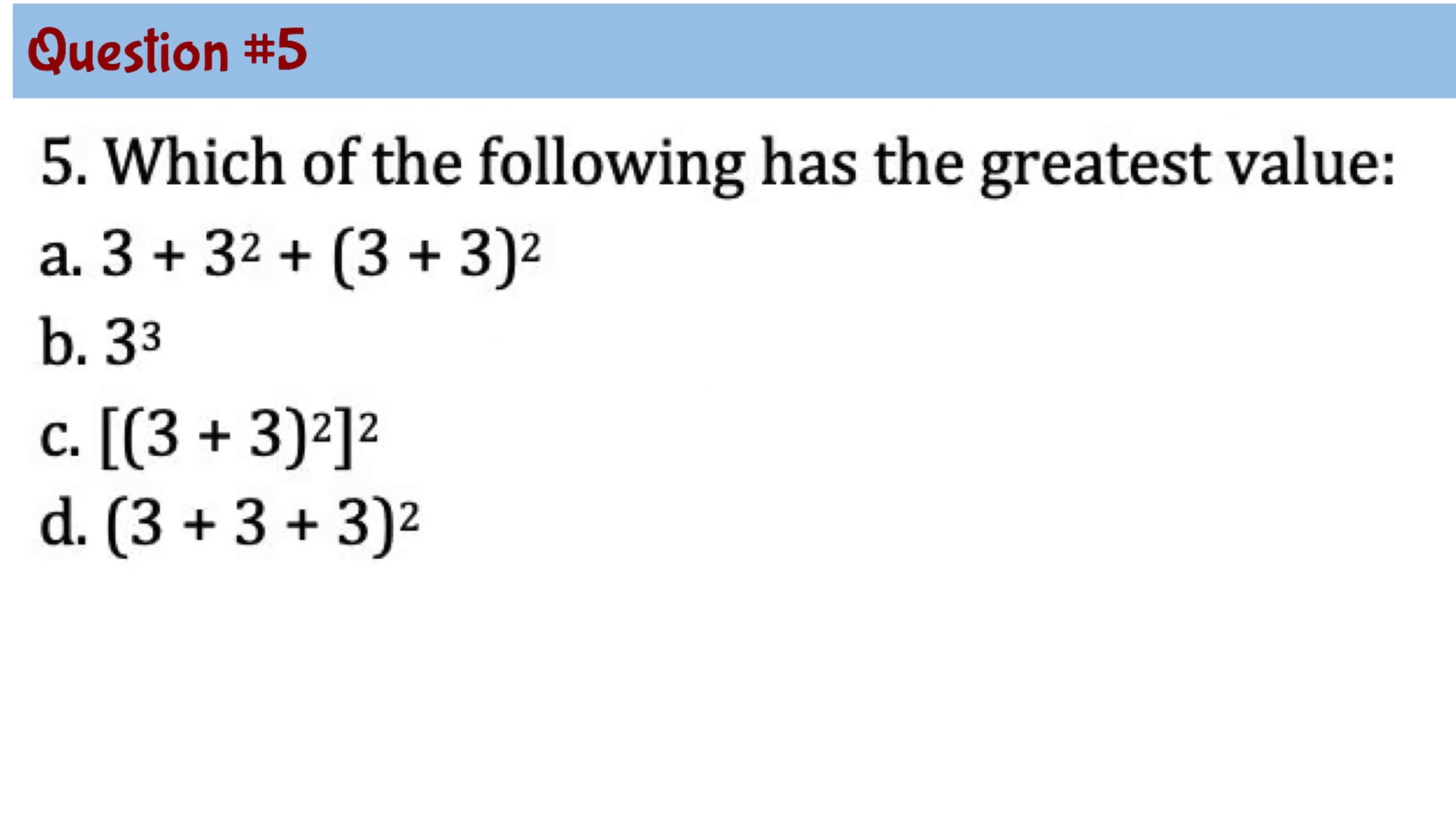Question number 5. Which of the following has the greatest value? So to solve this problem, we need to simplify each expression using order of operations. So the expression that can be easily simplified is options B and D. So 3 to the third power means we need to do 3 times 3 times 3, and that's going to be 27. Option D, we need to do 3 plus 3, 6. 6 plus 3, 9. And 9 square means 9 times 9, and that is 81. So this means that it can't be letter B.